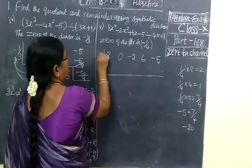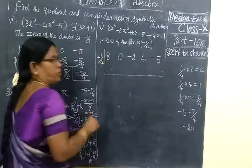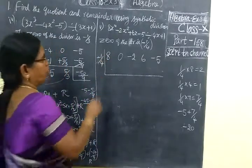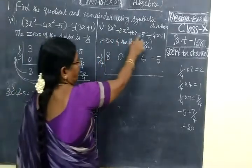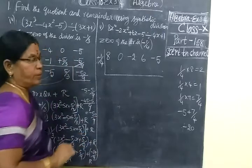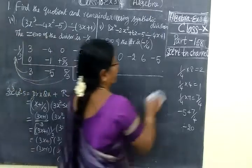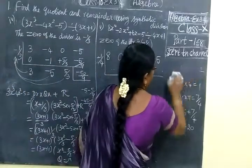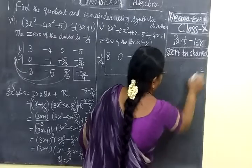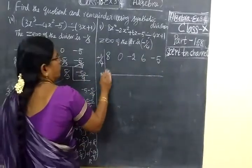So we get the divisor value: minus 1 by 4. First we check the sum whether it is in standard form. So we collect it. Now we multiply.